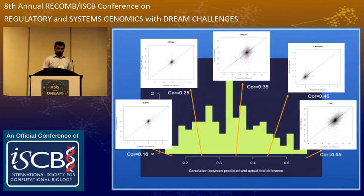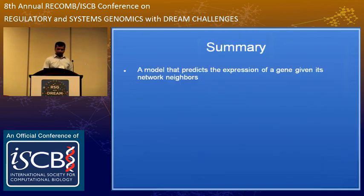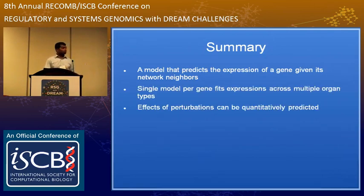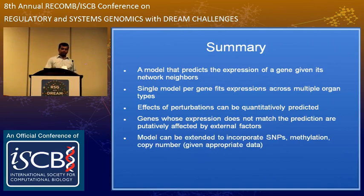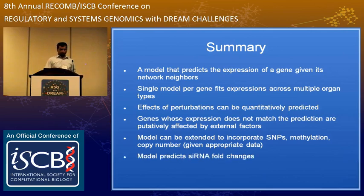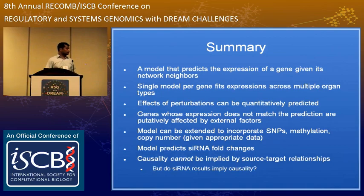In summary: I have a model that predicts the expression of a gene given its network neighbors; a single model per gene fits expression across multiple organs; effects of perturbations can be quantitatively predicted; and genes whose expression does not match the predictions are putatively affected by external factors. This model can be extended to incorporate SNPs, methylation, copy number, and other factors that change gene expression. Right now those would all be predicted as external factors, but if included in the model they become modeled as well. The model predicts siRNA fold change, though you cannot estimate causality from it.